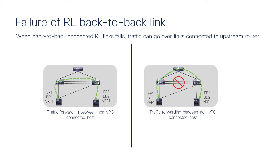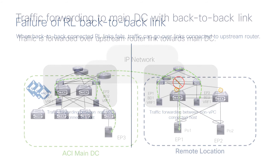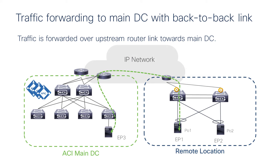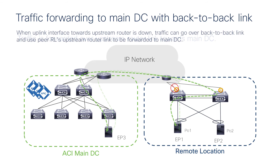What this also gives you is — let's say the back-to-back connected link fails — no problem, the traffic can go over the upstream router and be forwarded. If you look at how traffic will go to the main data center, of course it's local forwarding from the remote leaf. But what we can achieve with the back-to-back link is — let's say the upstream router goes down — the traffic can go over to its peer router over the back-to-back link, and from there it can get forwarded. So that's a huge benefit in terms of building more redundancy to the upstream router, and this back-to-back connected link can actually help you.